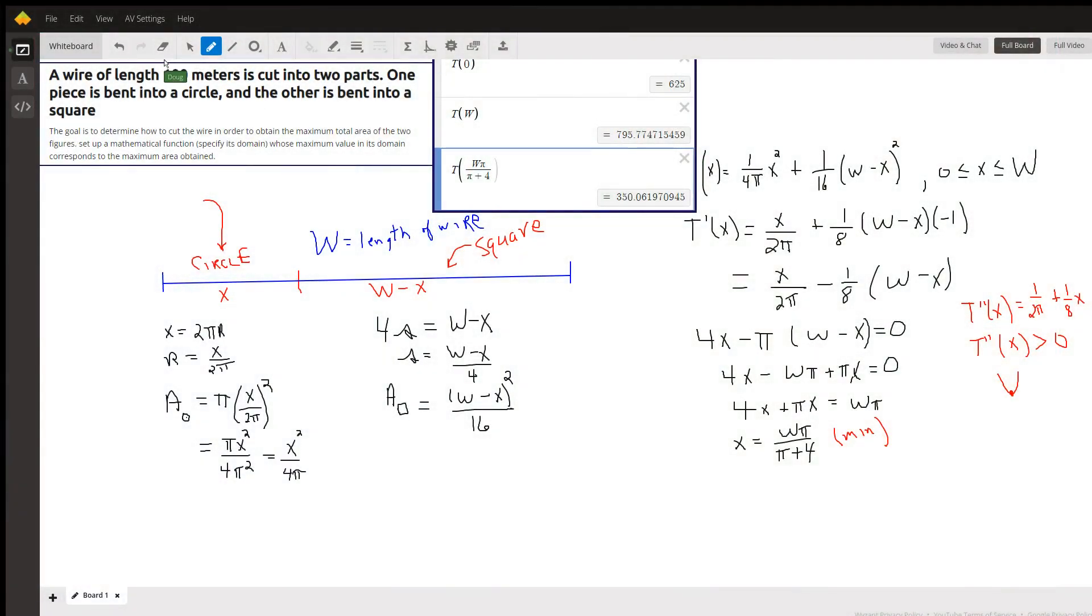Okay, there's at least a couple ways to do this problem, but here's an idea. Instead of using 100 meters when we solve it, let's just let the length of the wire be represented by w and see if we can come up with the general formula for the place where the wire should be cut so that we get the maximum and or minimum area of the two figures.